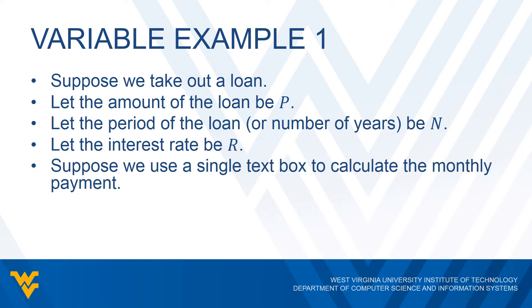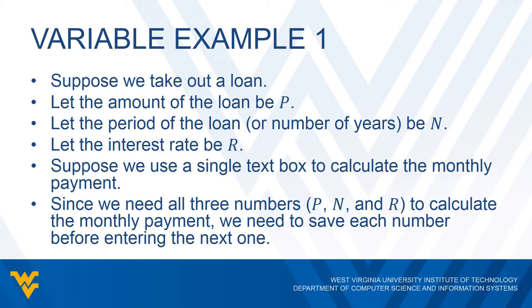Let's say we use a single text box to do this calculation. We would enter the loan amount, then the period of the loan, and then the interest rate. The problem is we need all three numbers to calculate the monthly payment, but with text boxes, when I enter something and then it gets cleared, that value is gone. So we have to make sure we save each number before entering the next one. Here we need three variables in order to calculate the monthly payment.